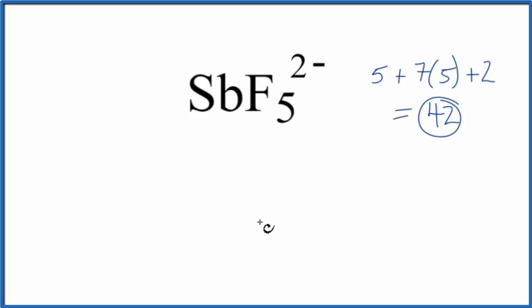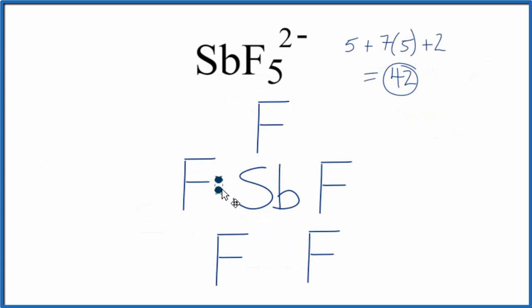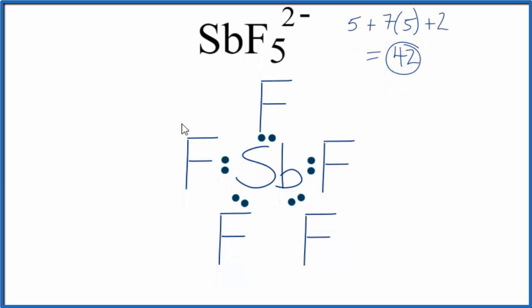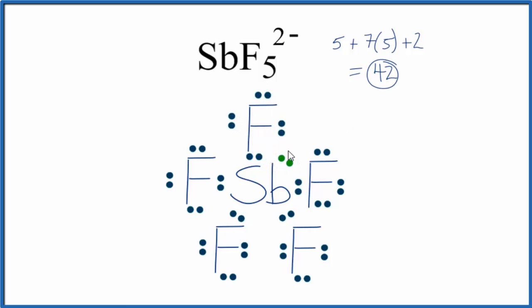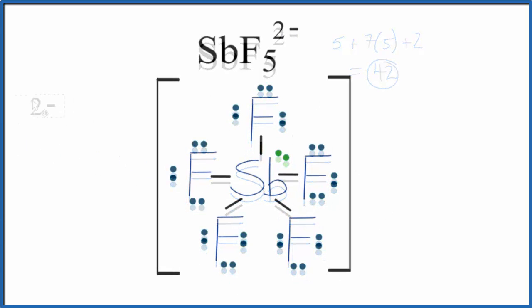We'll put the least electronegative element in the center — that's the Sb — and then put the 5 fluorine atoms around the outside. We'll put a pair of electrons between atoms to form the chemical bonds, then go around each fluorine and complete its octet. At this point we've used 40 valence electrons, but we have 42. Each fluorine has an octet — those are good. The central Sb has 10 electrons, more than an octet, but that's okay — it can have an expanded octet. So we'll put the last two valence electrons on the central Sb. This is the Lewis structure for SbF5 2-. We also need to put brackets around it since it's an ion, then put the 2- charge outside.